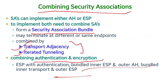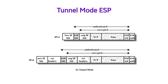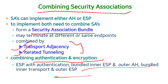In summary, security associations can be combined in four different ways to provide a security association bundle. Authentication and confidentiality are provided through the authentication header and encapsulating security payload working together in various transport and tunnel mode configurations.